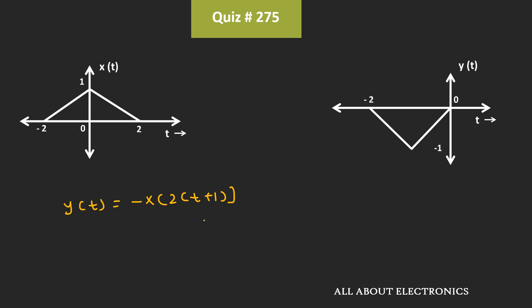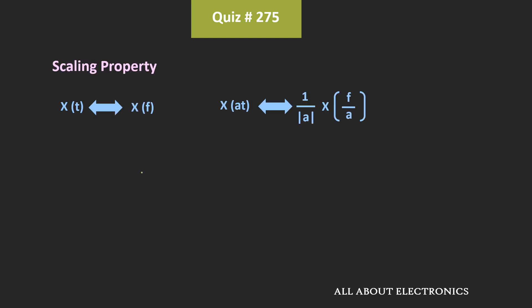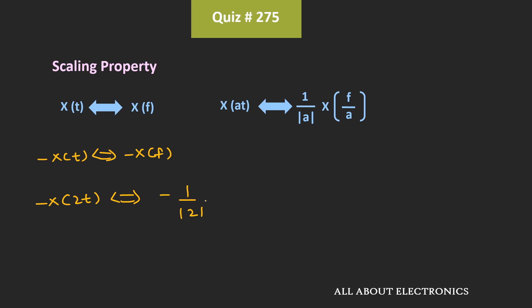Now we need to find the Fourier transform of this signal. For the Fourier transform, we already know the scaling property. That means if X(f) is the Fourier transform of x(t), then for the signal x(at), the Fourier transform can be given by this expression. At the same time, if we have a signal -x(2t), then its Fourier transform will be equal to -X(f/2). So for the signal -x(2t), the Fourier transform can be given as minus 1/2 times X(f/2).